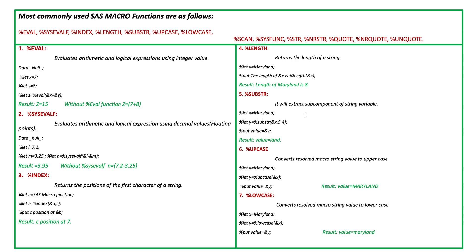Number five is %SUBSTR. It extracts a subpart of a string variable. Using the same macro variable X with value 'Maryland', we create another macro variable Y using %SUBSTR(&X, 5, 4). The 5 represents the starting position and 4 is the number of characters to take. The result is 'land' — starting at position 5 (L) and taking four characters: l, a, n, d.